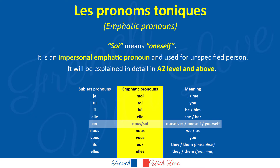Soi means oneself. It is an impersonal emphatic pronoun used for an unspecified person. It will be explained in detail at A2 level and above.